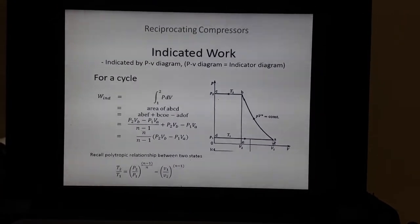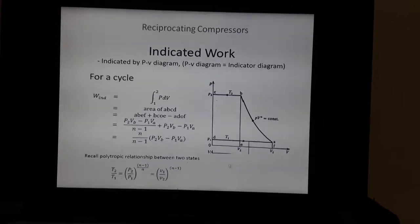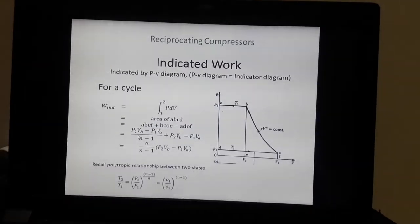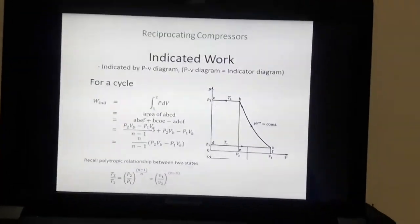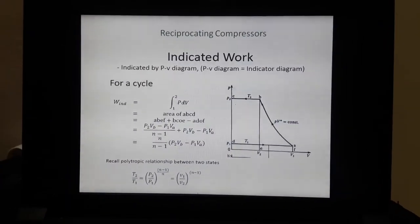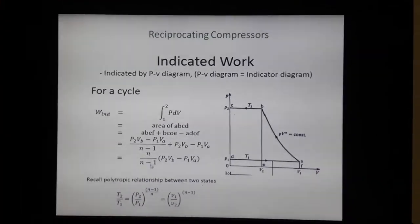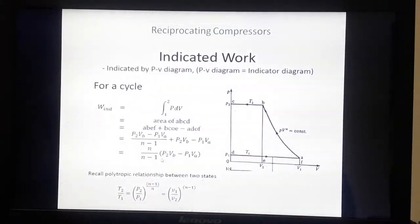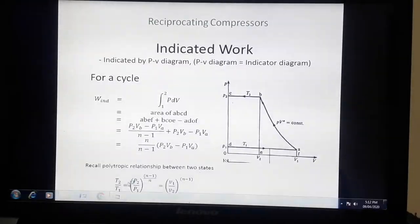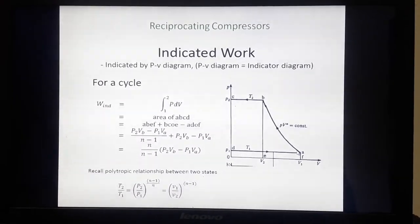For process A to B, process B to C, and process D to A, we can write the same area as: (P2·Vb − P1·Va) / (n − 1) + P2·Vb − P1·Va. Taking P2·Vb − P1·Va common, we continue. For the process A to B it is the polytropic process.